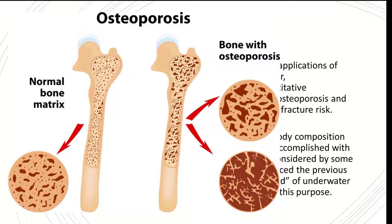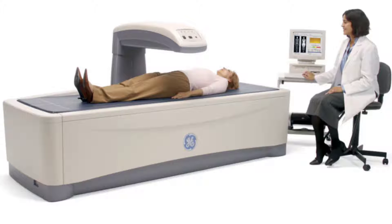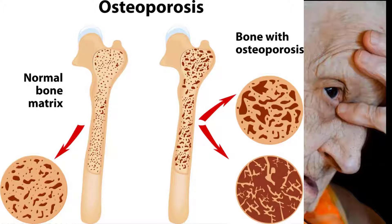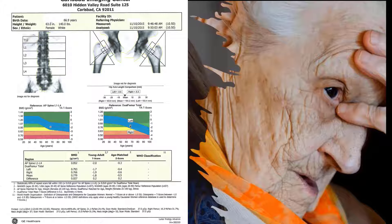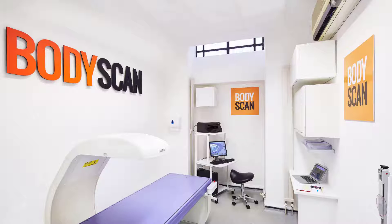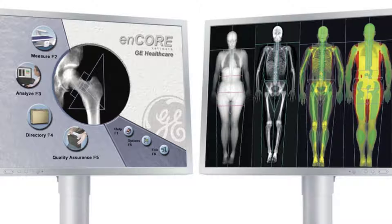Today we will focus mainly on bone mineral density DEXA scanning. There are a number of factors to take into consideration when measuring the density of calcium in the bone. Measurements can provide information on early gender and ethnic changes in the rate of bone deposit, determining the age when skeletal growth ceases, and also when bone mass peaks at around age 30. DEXA scanning can be used from infants through the elderly, depending on what the physician wants to quantify about bone mineral density or body tissue composition.